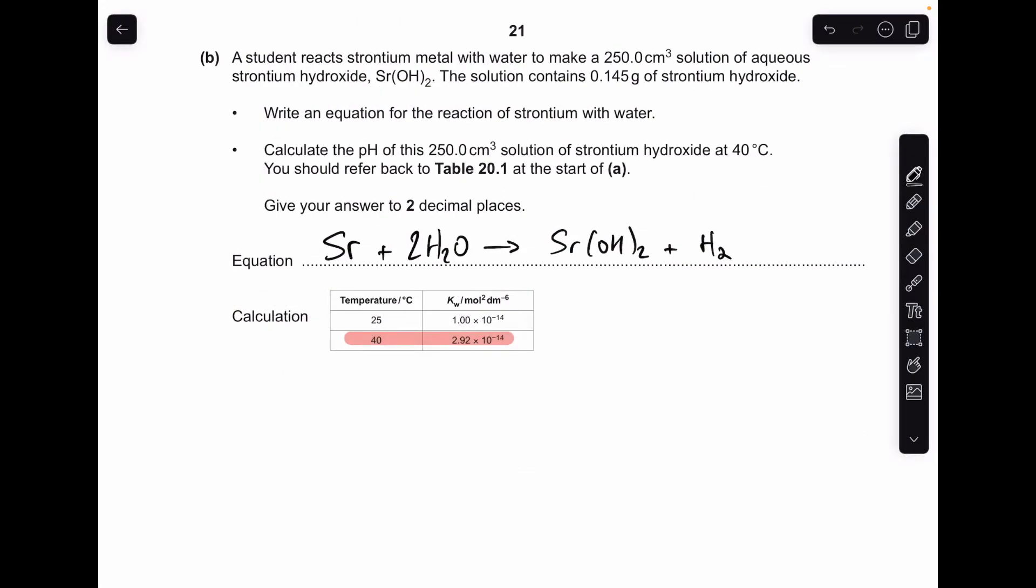Moving on to part B, the equation for strontium and water I've written up already. Any group 2 metal reacts with 2 moles of water to form the metal hydroxide and hydrogen.